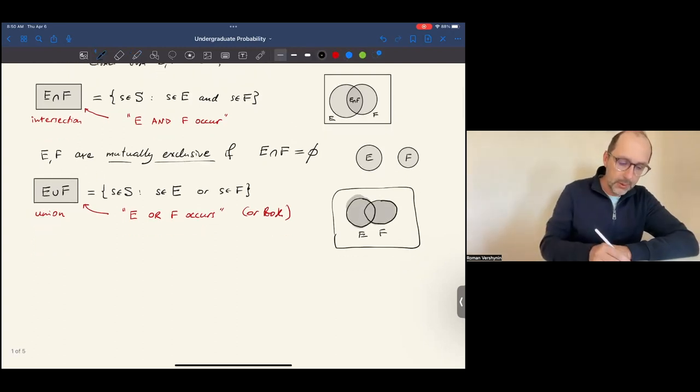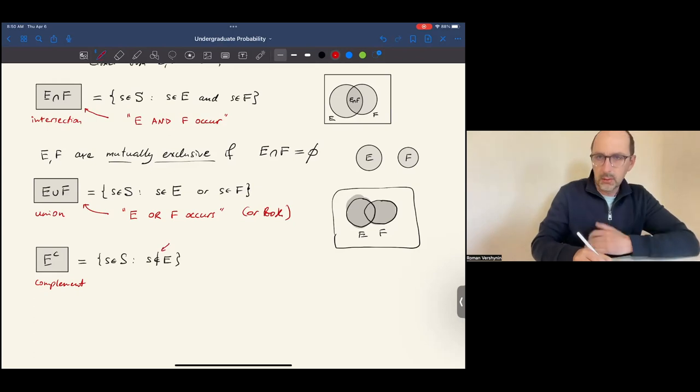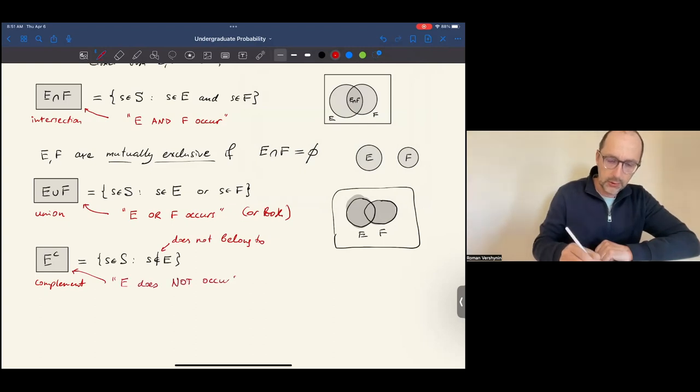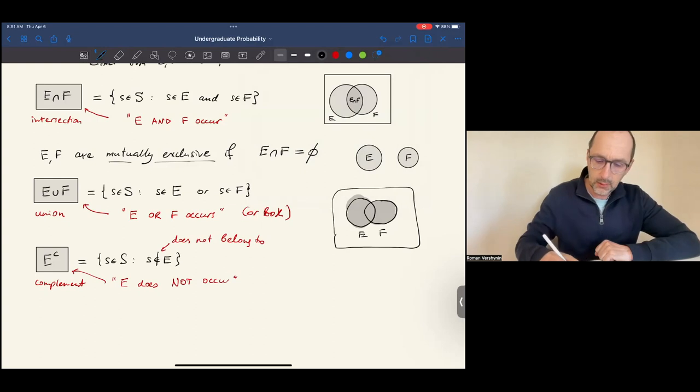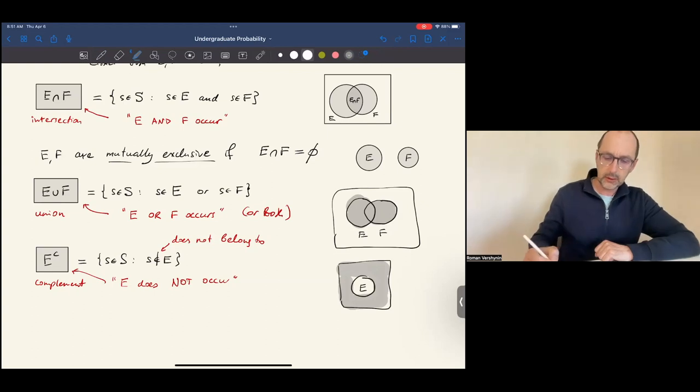The complement of an event E consists of all outcomes that are not in E. That letter means does not belong to. This event means that E does not occur. And the Venn diagram for this event looks like this. Everything that's outside E is the E complement.